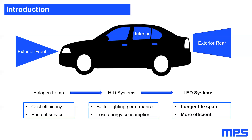LED systems offer improved efficiency and long lifespan, making them very attractive for automotive applications. They also have light-emitting characteristics that allow manufacturers to reduce the number of external components needed to reflect and redirect light, enabling compact systems. Furthermore, since LED diodes are small, we can build complex systems that introduce features never seen before in automotive lighting.